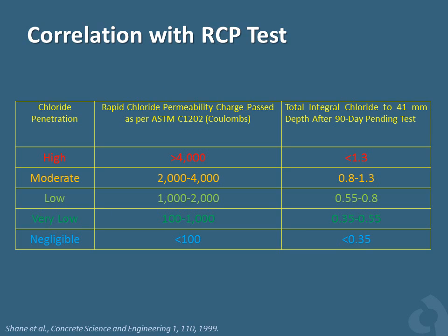Speaking of the applications of the electrical resistivity measuring technique, one can consider the resistivity technique as a suitable replacement for more traditional tests such as the previously discussed RCP. This table shows a proposed relationship between the RCP test results and the electrical resistivity of concrete. Similar research has shown a reliable relationship between the results of these tests. Considering the time and cost of RCP tests, electrical resistivity techniques can be a powerful alternative.